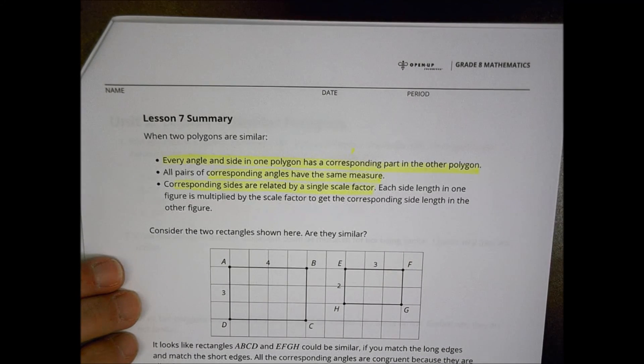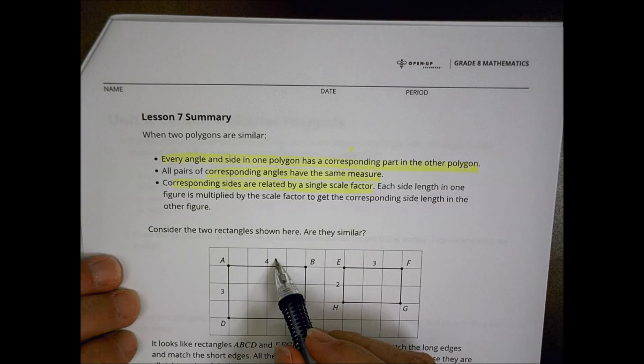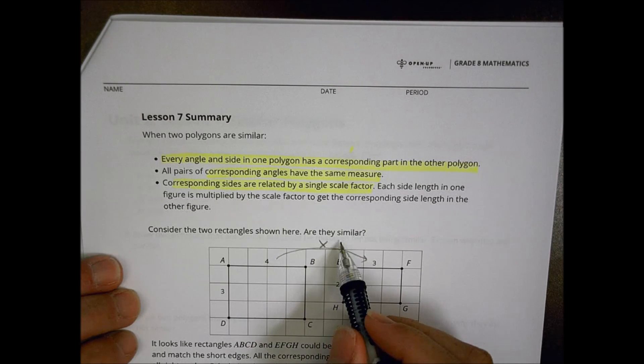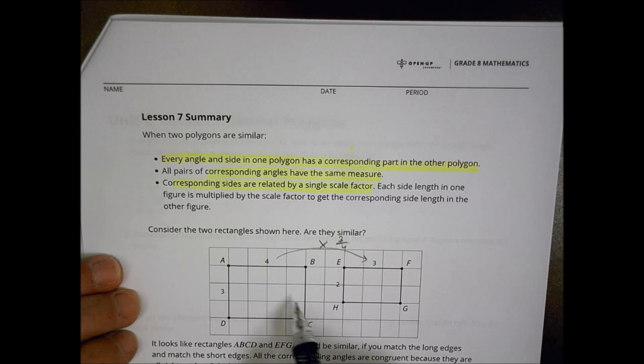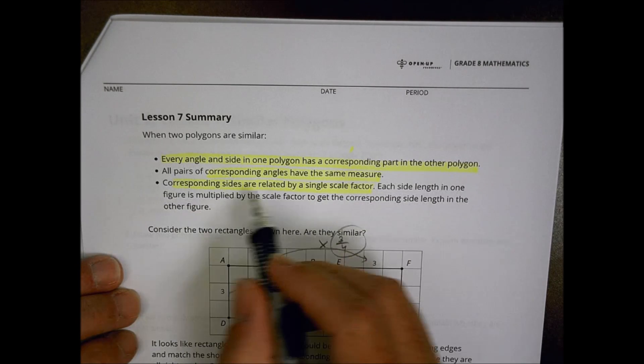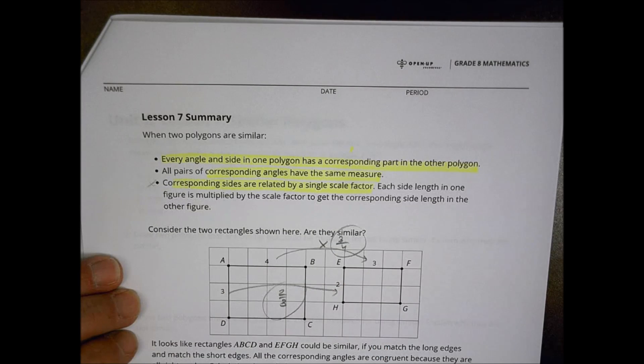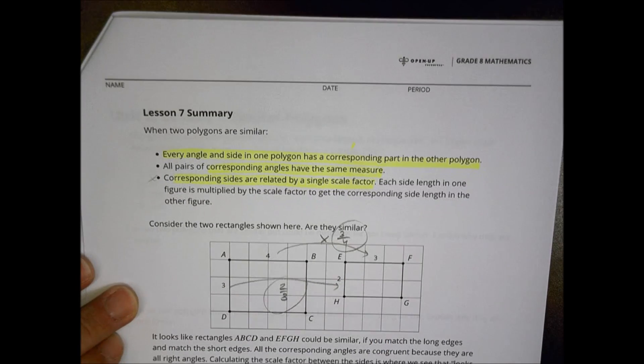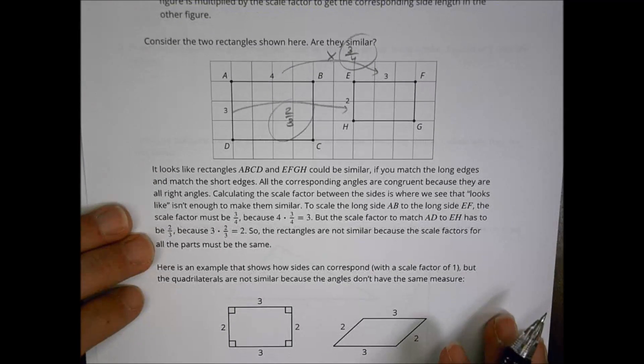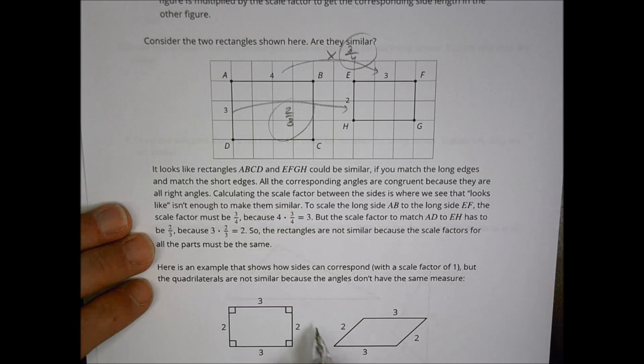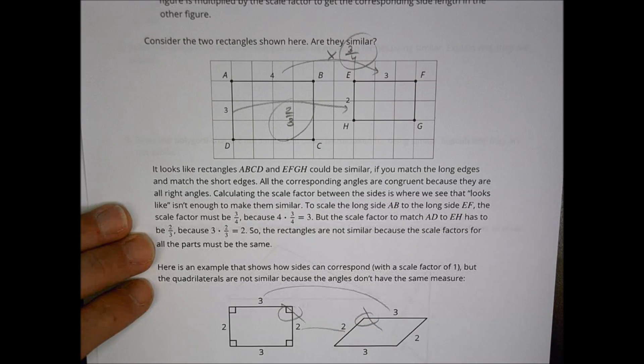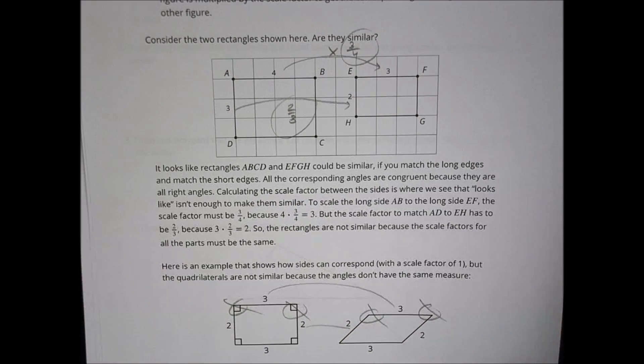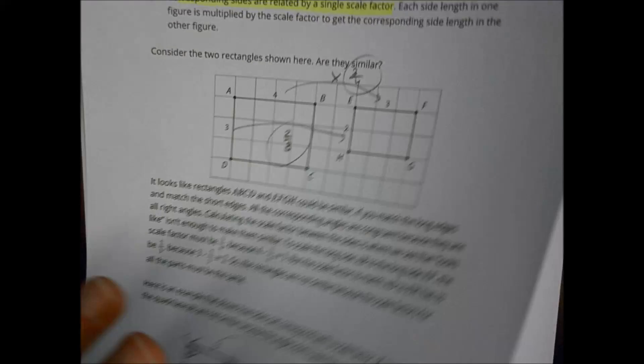So when we look at a shape like this for example, to go from a 4 to a 3, that's going to be a scale factor of 3 fourths, but to go from a 3 to a 2, that's a scale factor of 2 thirds. Because those scale factors are different, then that means it's not going to work according to that rule right there. The other thing that takes place is we want to make sure that the angles are the same measurements here. So while those might match there, our angle measurements don't match. And because the angle measurements don't match, we're not going to have a similar shape there. So keep that in mind.